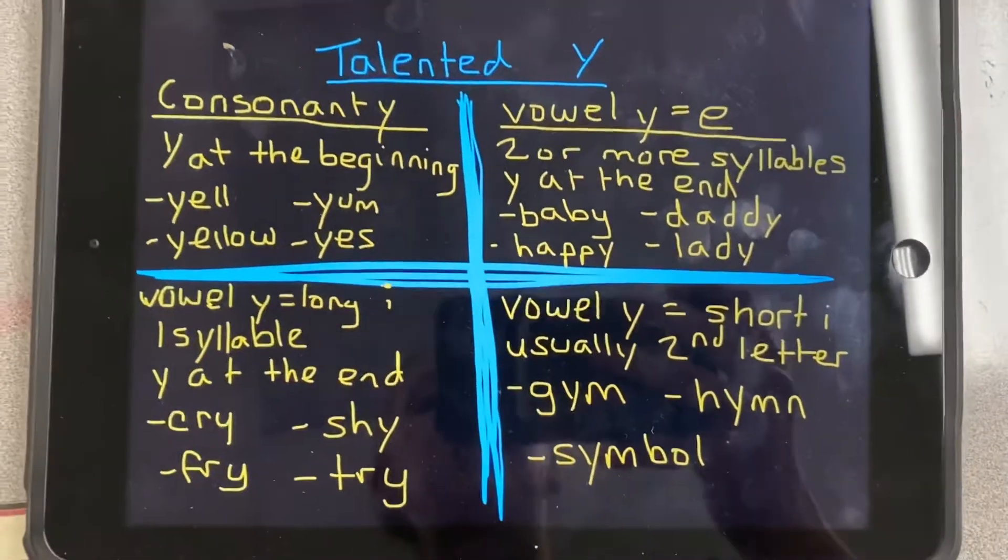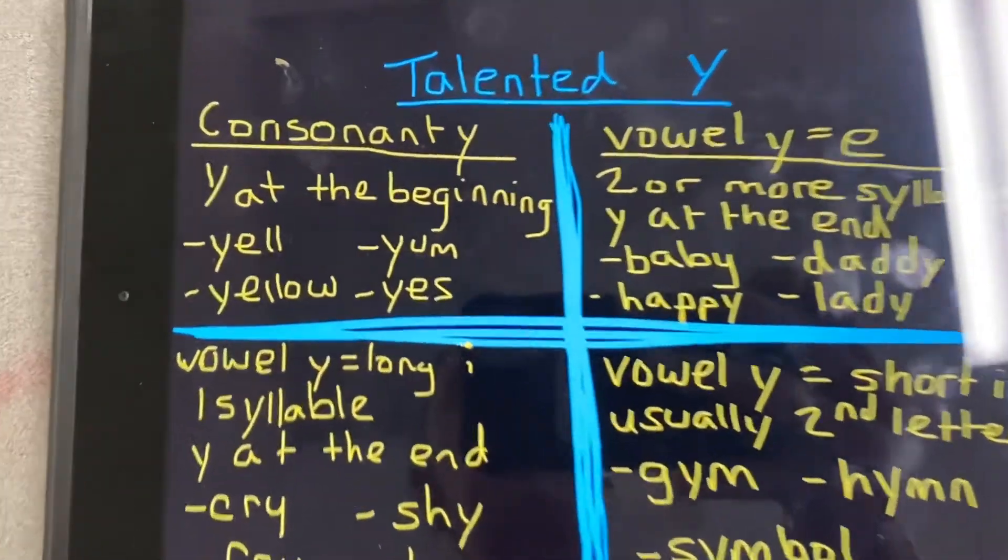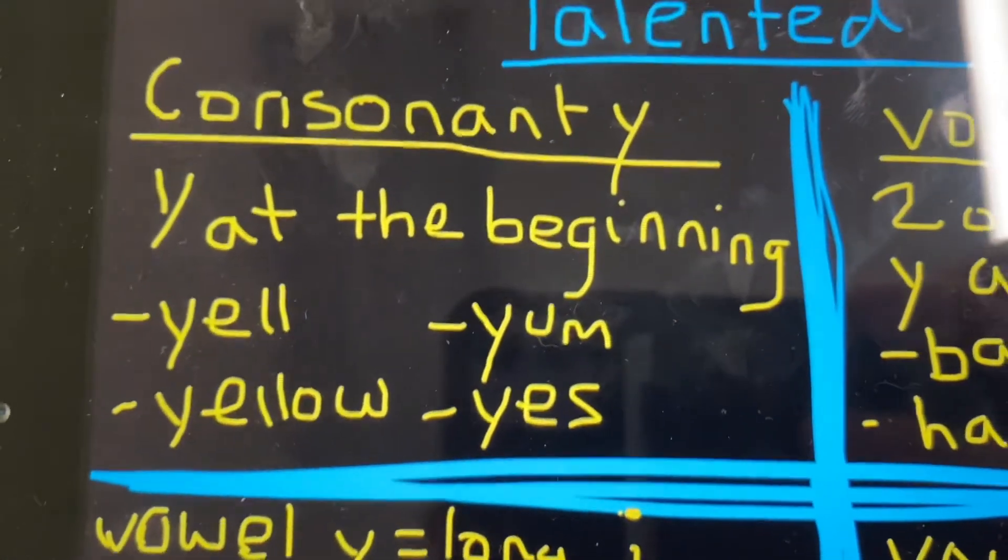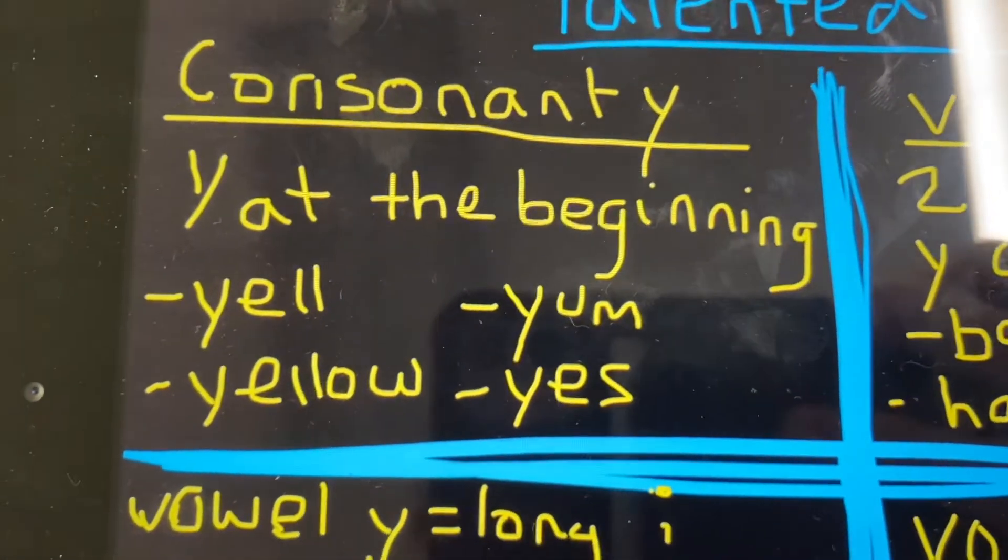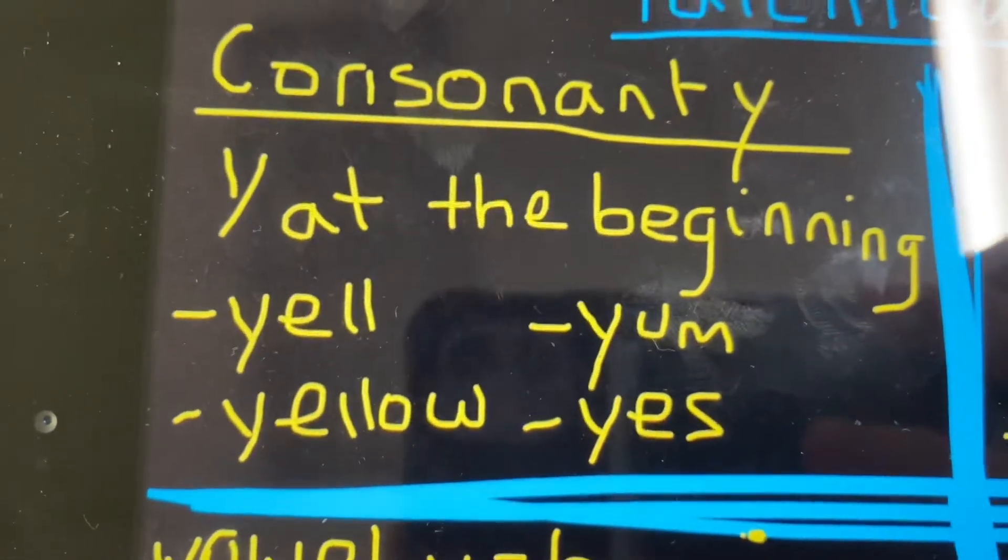When we're thinking about talented Y, we need to think about all the sounds Y makes. When we're thinking of consonant Y, which says yuh, it is at the beginning of the word, like yell, young, yellow, or yes.